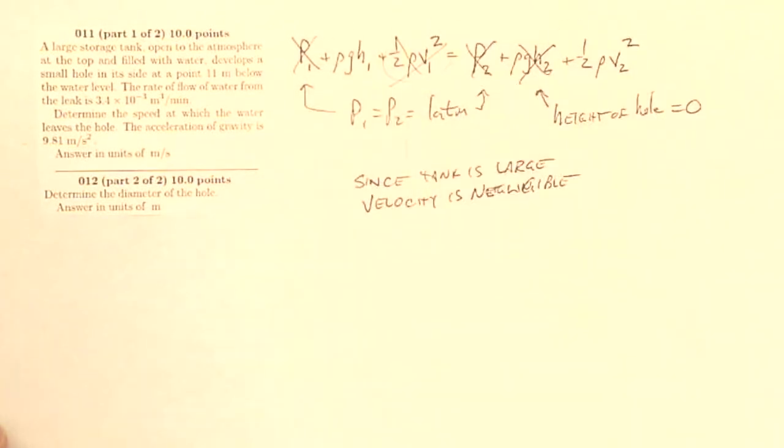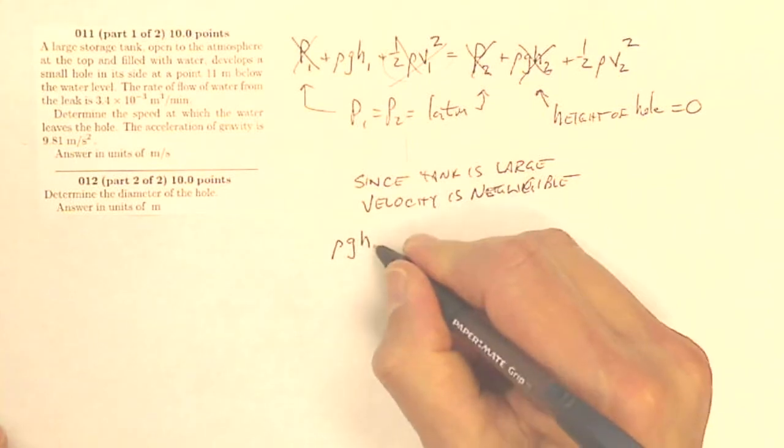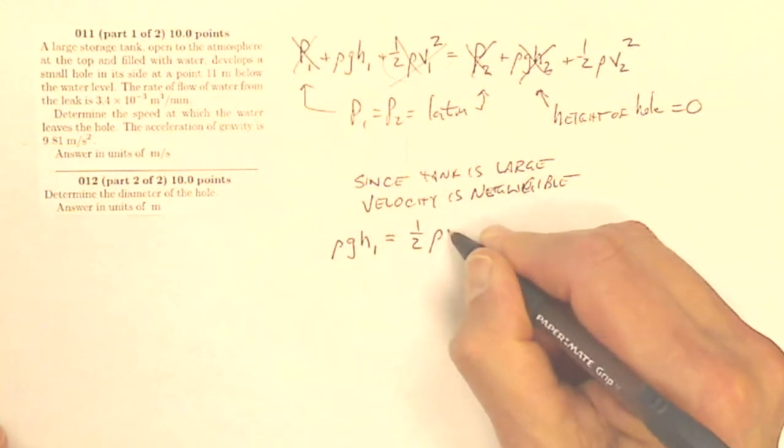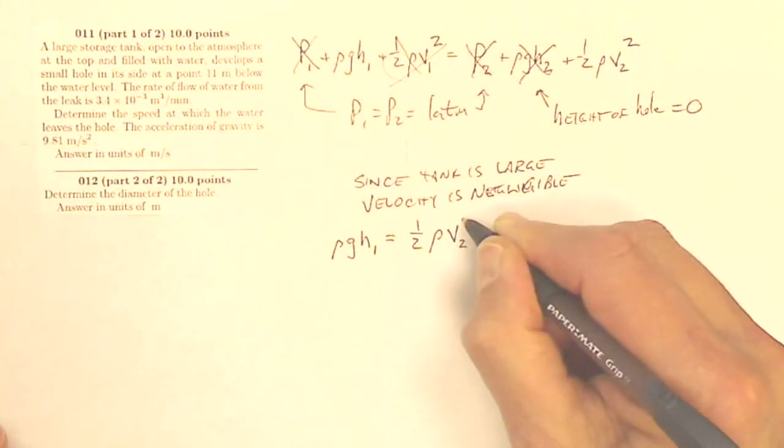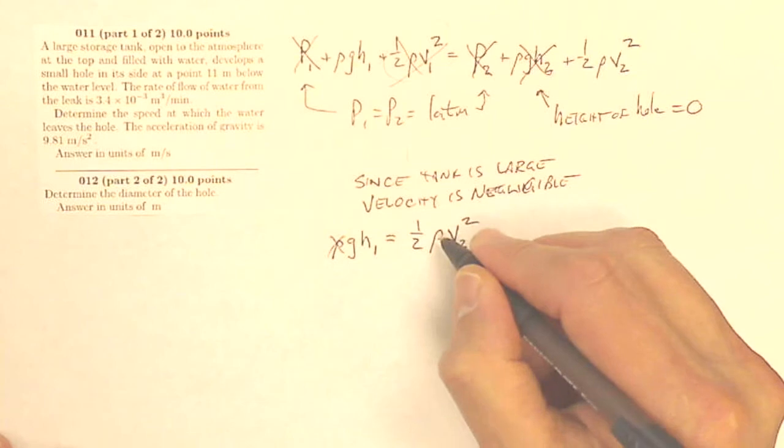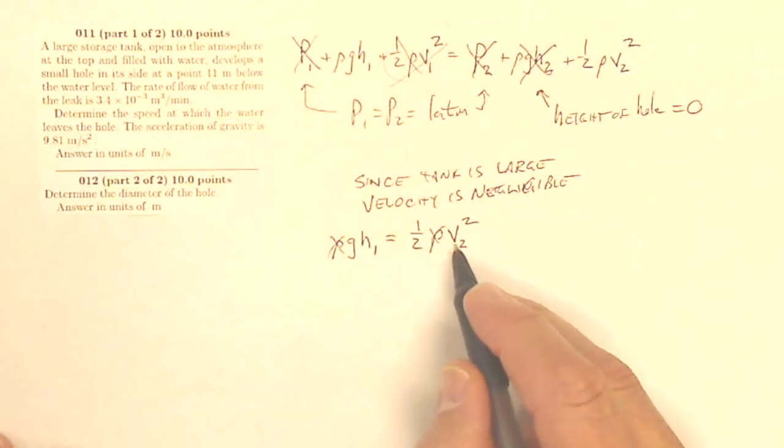So all of that, what I'm left with is that rho g the height above the hole equals one half rho velocity of the water at the hole squared. You even see density here is going to go away. So I've got gh equals one half v squared.